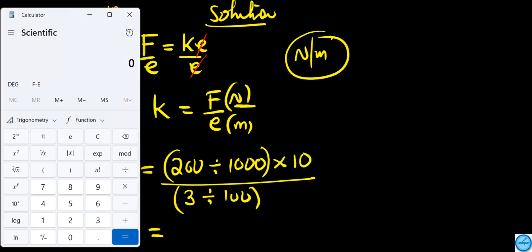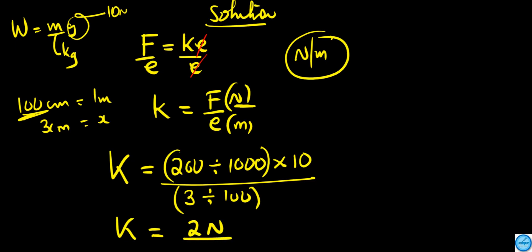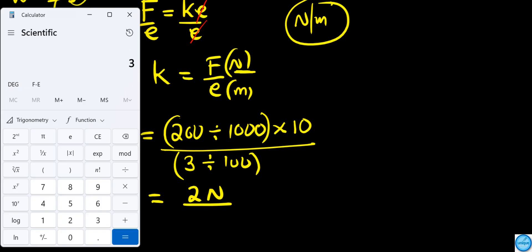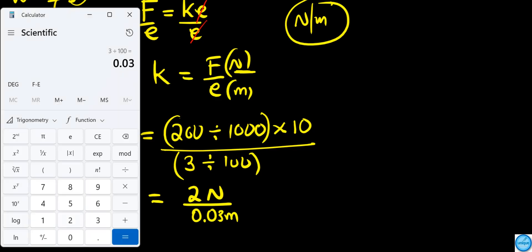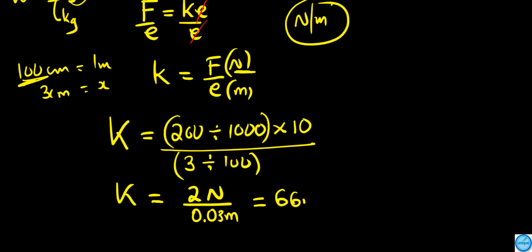So we divide 200 divided by 1000, which is 0.2, times 10, we have 2 Newtons, then divided by 3 divided by 100, so we have 0.03 meters. 2 divided by 0.03 is 66.67 Newtons per meter. That's the spring constant.